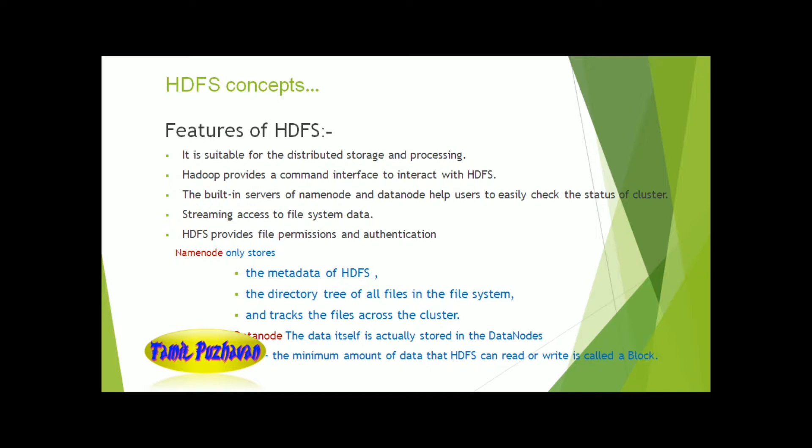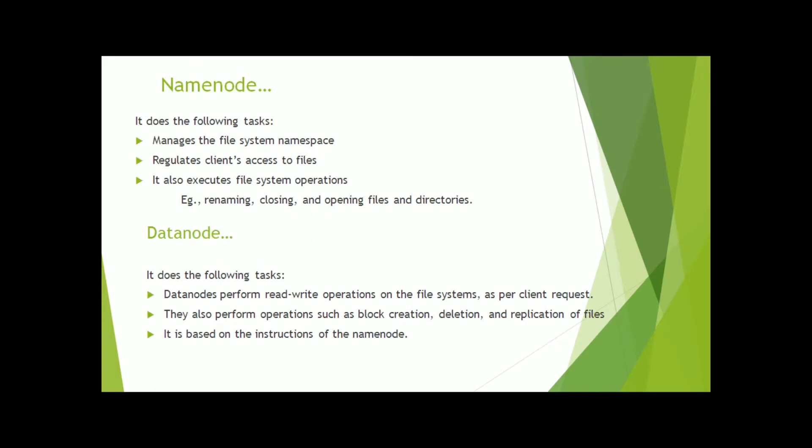HDFS provides file permissions and authentication. The NameNode stores only the metadata and directory tree, tracking all files across the cluster. The DataNode stores the actual data. A block is the minimum amount of data that can be read or written, and together NameNode, DataNode, and block form the HDFS architecture.